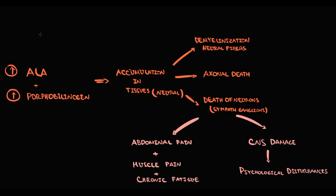Both ALA and porphobilinogen are excreted from the organism through the urine. So with high plasma level, the concentration of both ALA and porphobilinogen in the urine will be elevated. And this gives urine a port wine color.